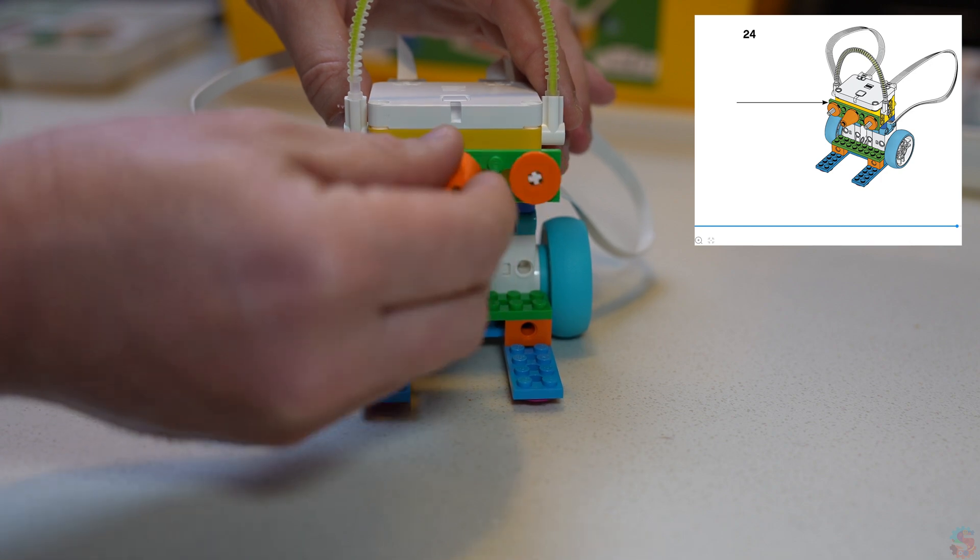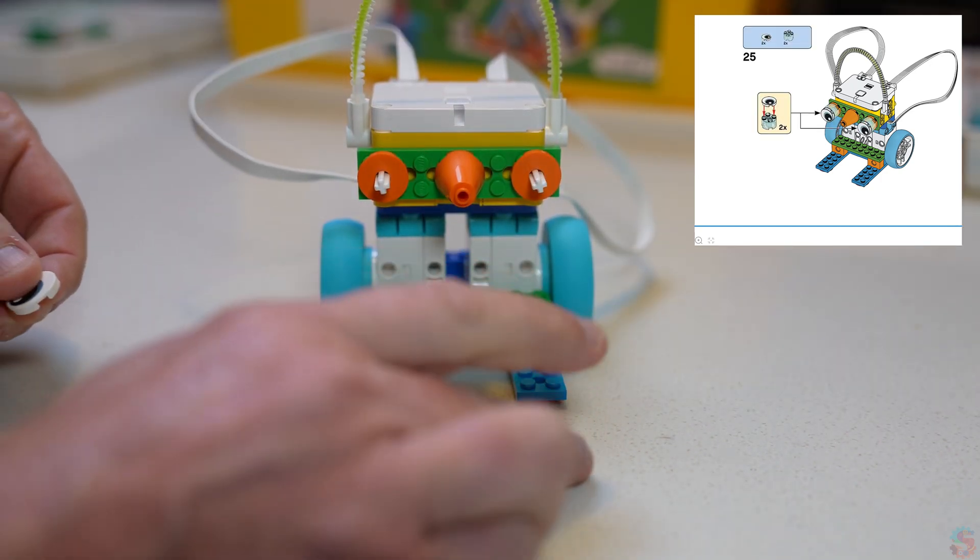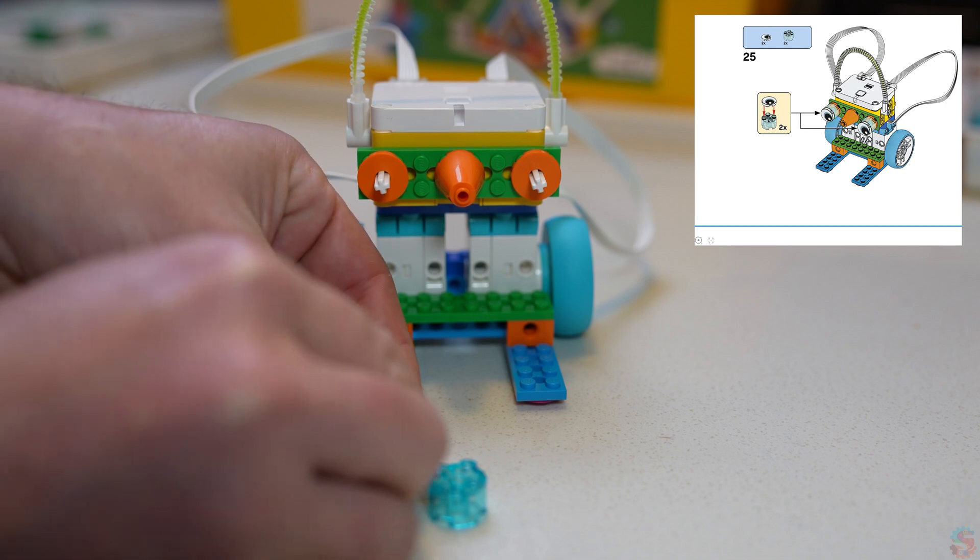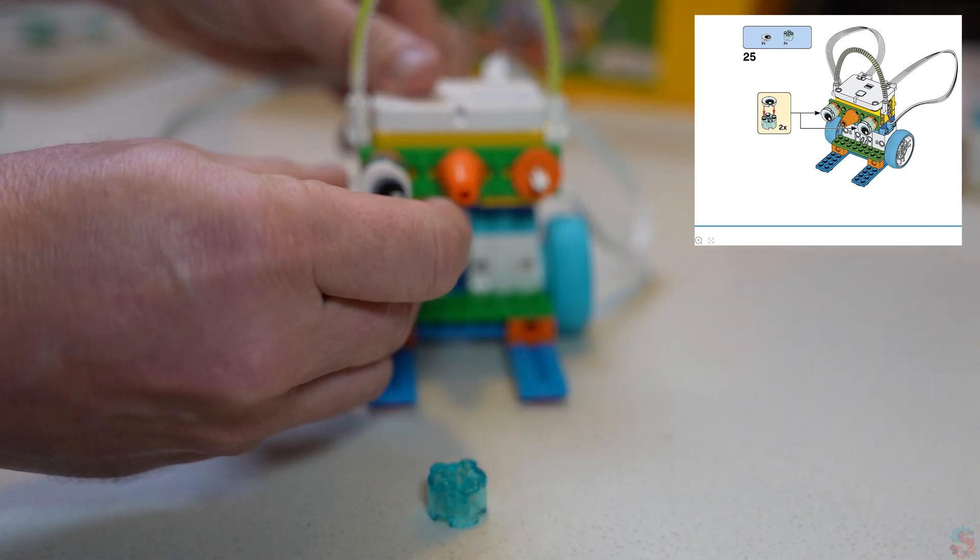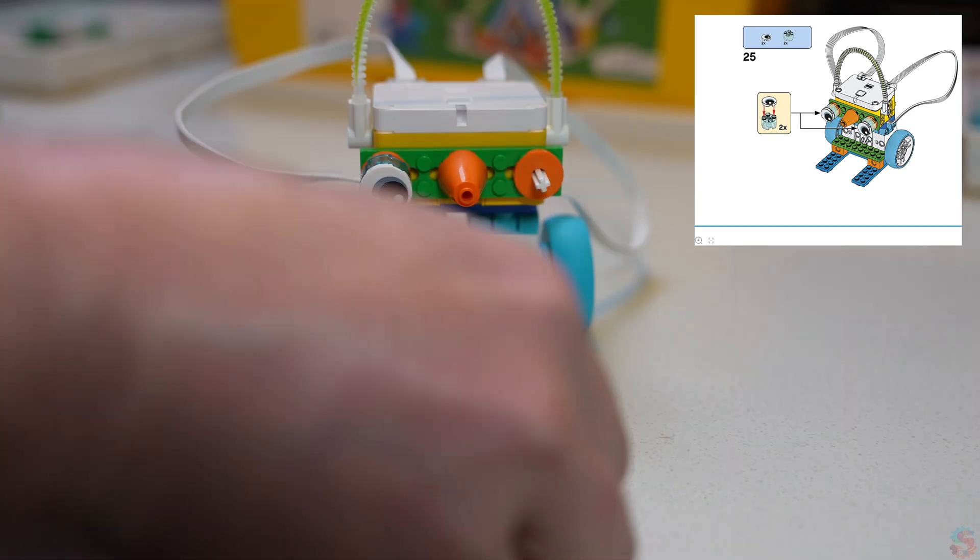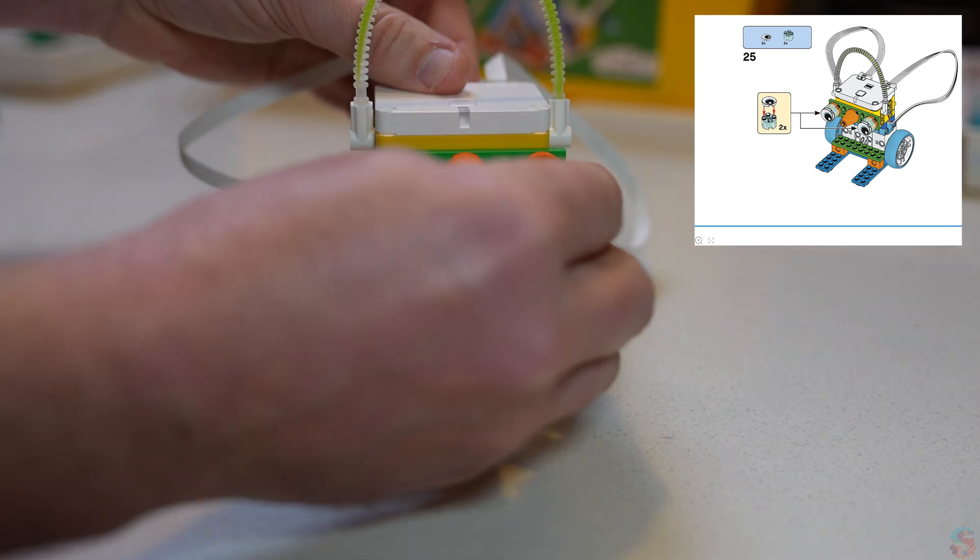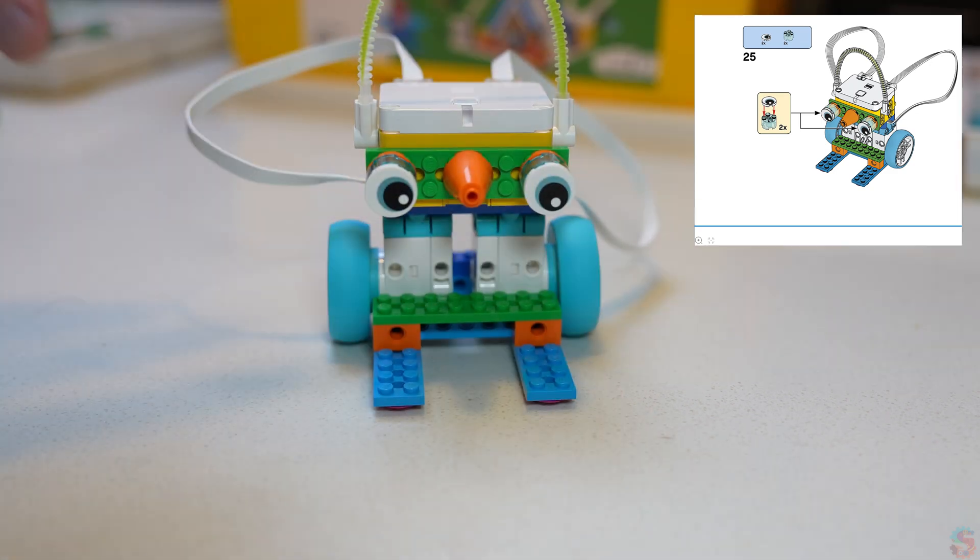Let's give this robot some eyes. People think robots are friendlier when they have a friendly face. So we'll take one of our round blue pieces and put an eyeball on top of it and attach that. And our robot is pretty much done.